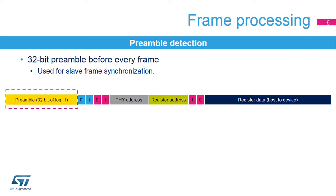When enabled, the MDIOS monitors the MDIO interface for an incoming preamble. At least 32 bits on MDIO shall be received with value 1 to detect a valid preamble. This allows the slave device to synchronize with the MDIO bus. Once synchronized, the 32-bit preamble is required after any received frame. Only after the MDIOS is synchronized, the preamble errors between received frames are reported by the PERF bit. Once the MDIOS is synchronized with the MDIO interface, the preamble check can be disabled by the DPC bit, allowing the host to send frames without preamble.